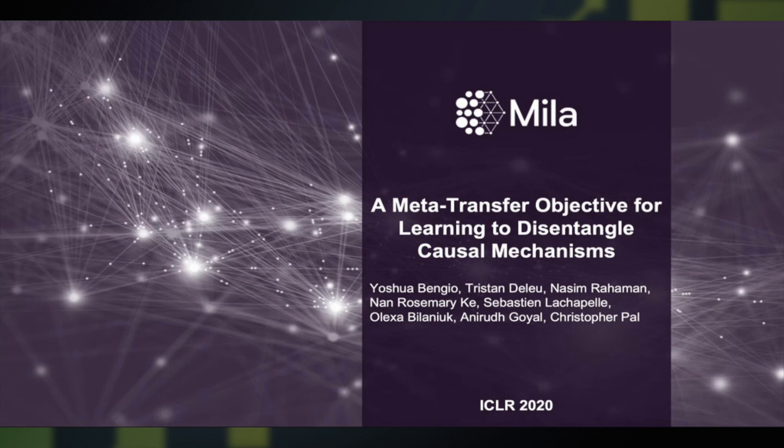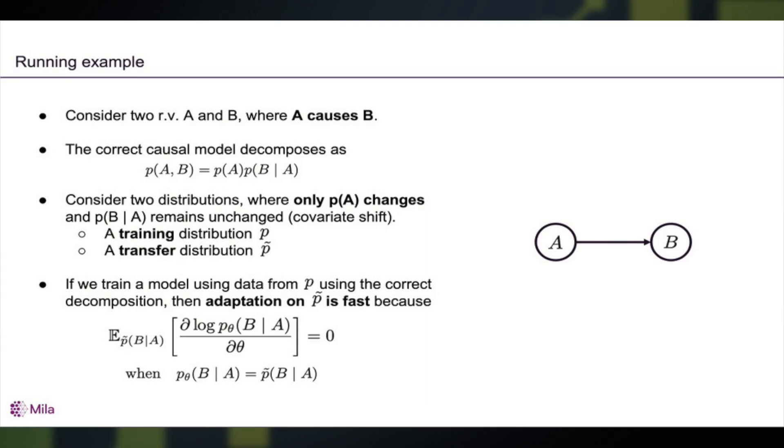We're considering the situation where we have two random variables, A and B, and we would like to figure out whether A is the cause of B or B is the cause of A. The information we have at our disposal is that there's been a change in distribution due to an intervention on one of the variables. We don't know what the intervention is, or on which variable, but we're going to take advantage of the change in distribution in order to learn about the causal structure.